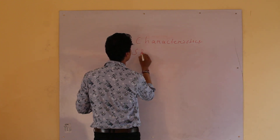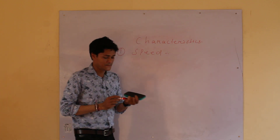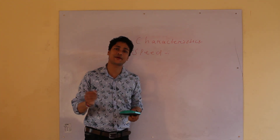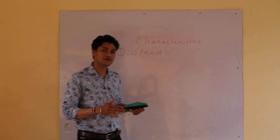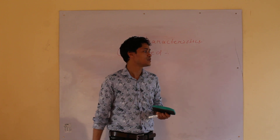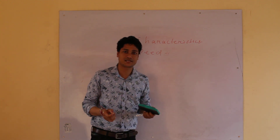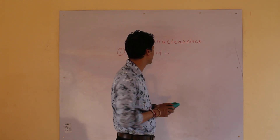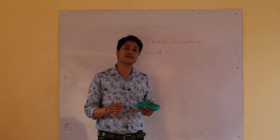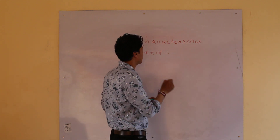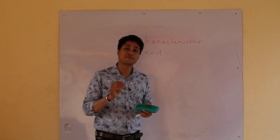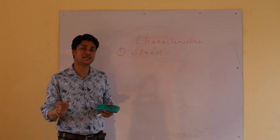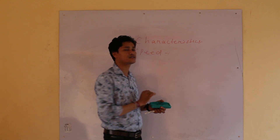The first characteristic of the computer system is speed. Speed means the time taken by the computer system to solve any complex task. You all work with computers — have you ever seen a computer take more time to solve any complex multiplication or addition? The computer does not take more time to solve any complex task. It processes millions of instructions per second, also known as MIPS.